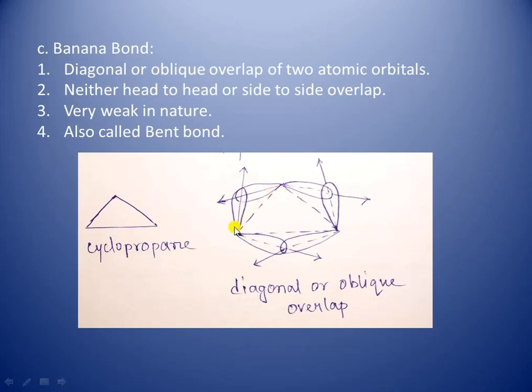As a result, this newly formed sigma bond will have a banana-like shape, that is, bent shape. For this reason, banana bond is called bent bond.